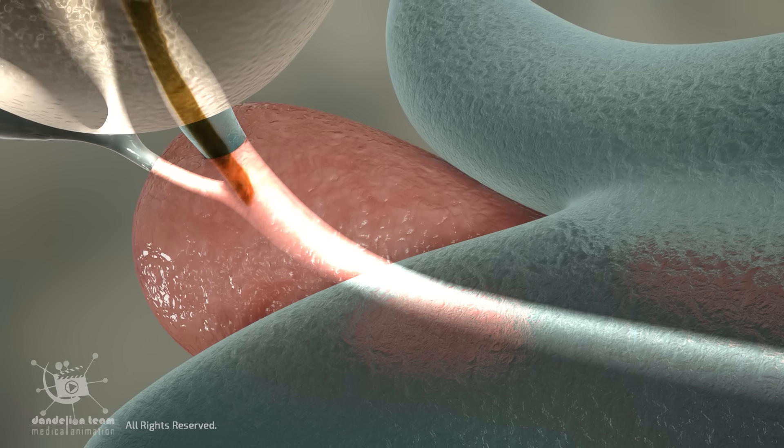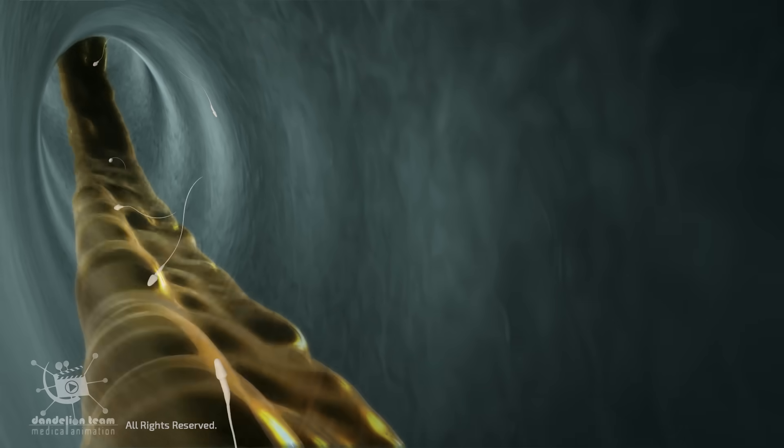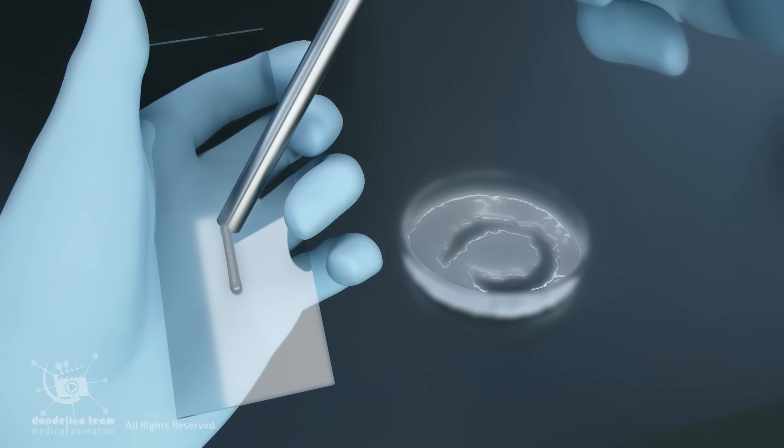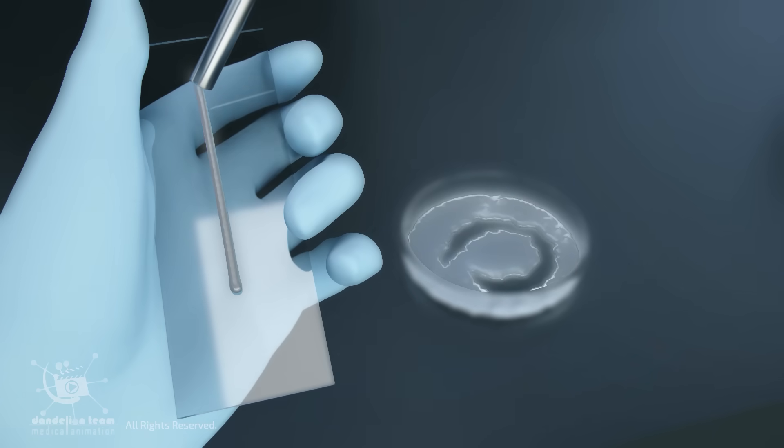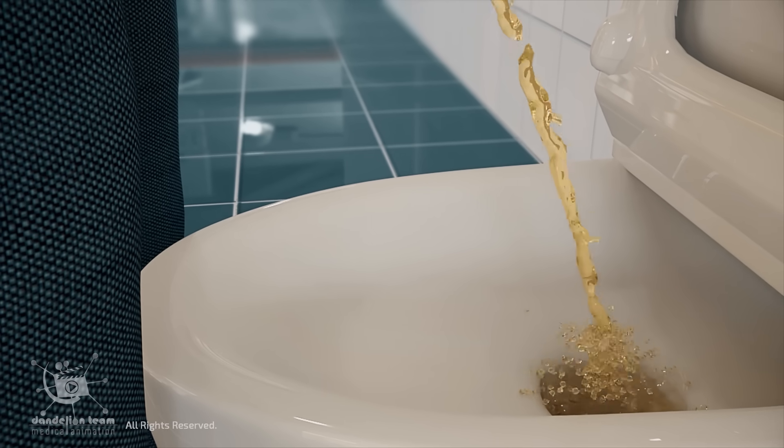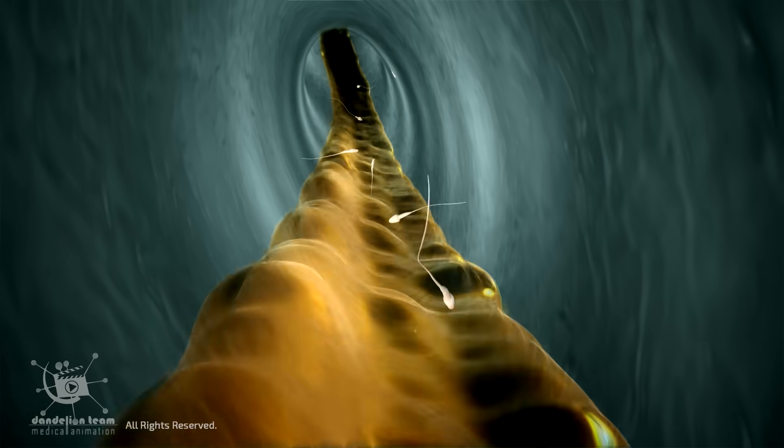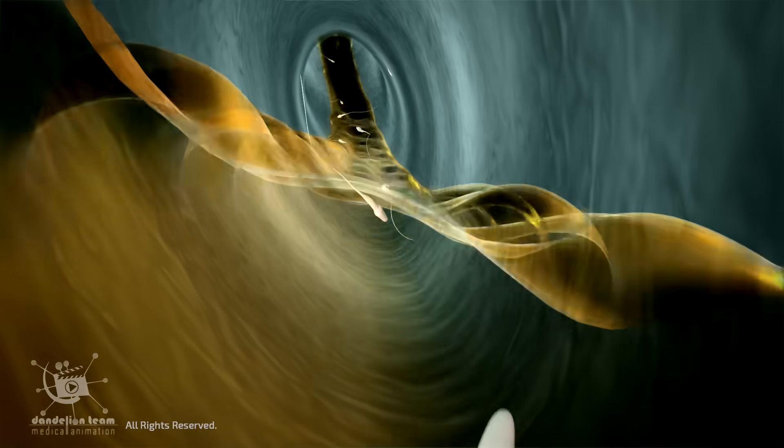While it's commonly believed that urinating after a previous ejaculation will flush out any remaining sperm, studies have shown that this isn't always the case. Urinating after ejaculation and before the next sexual activity can help flush out sperm lingering in the urethra, since urine is acidic and can wash away or damage most remaining sperm.